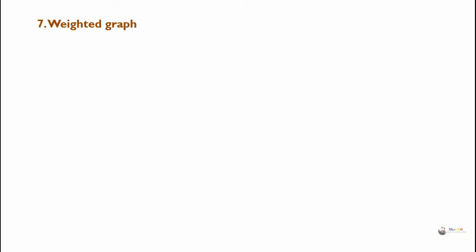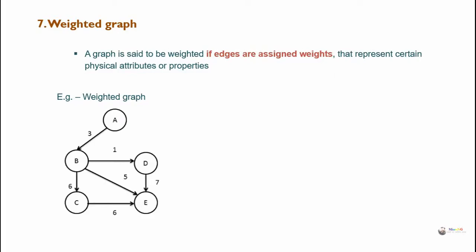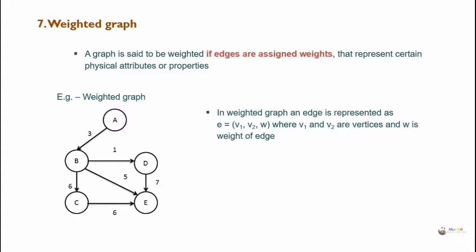Weighted graph: a graph is said to be weighted if edges are assigned weights that represent certain physical attributes or properties. Each edge is represented as E = (v1, v2, w) where v1 and v2 are vertices and w is the weight of the edge.